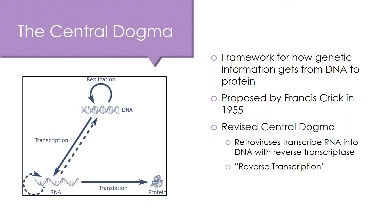Let's begin with the central dogma of molecular biology. The central dogma can be boiled down to the concept that DNA encodes RNA and RNA encodes proteins. It's the basic framework for how genetic information gets from DNA to protein. It was proposed in 1955 by Francis Crick. Then, sometime in the 1970s, it was discovered that retroviruses can transcribe RNA into DNA with an enzyme called reverse transcriptase. This process is known as reverse transcription.